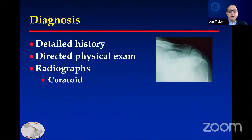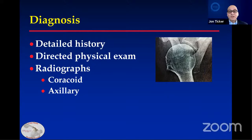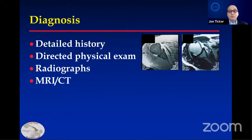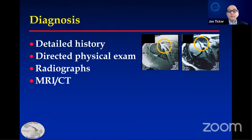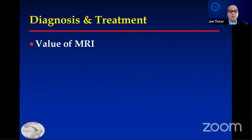X-rays are not as helpful — you can occasionally see a coracoid nonunion or a cyst adjacent to the lesser tuberosity — but the most important thing is the MRI or CT. Here you can see the axial cuts, which is the more common view that shows this well. As a clinician planning surgery, there's a lot of value in the MRI, and I'll go over that.